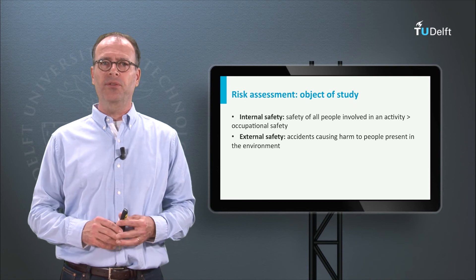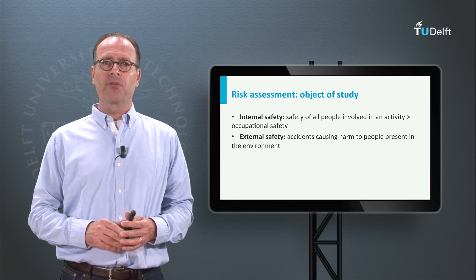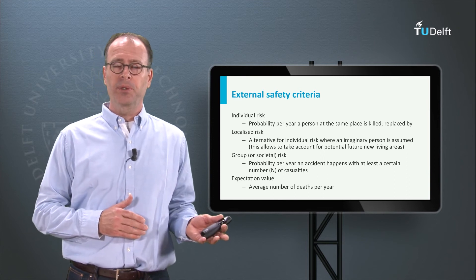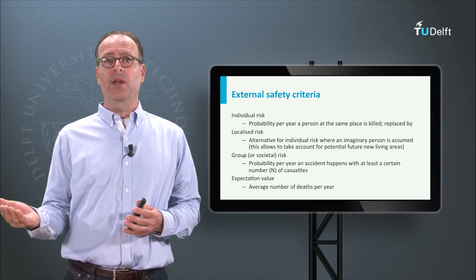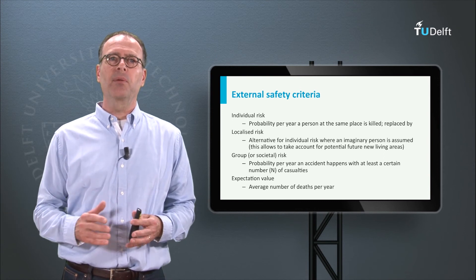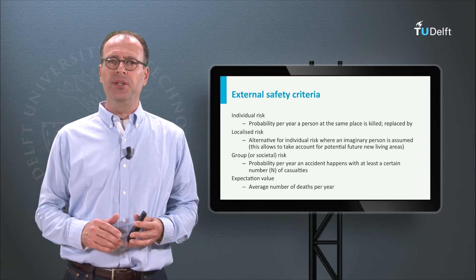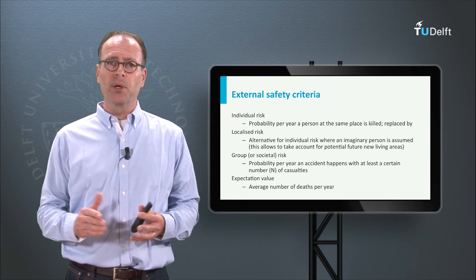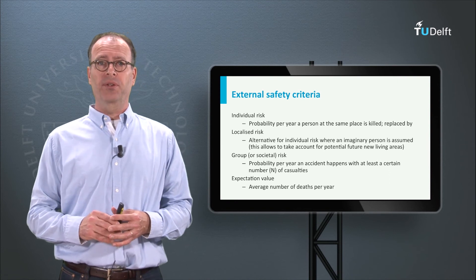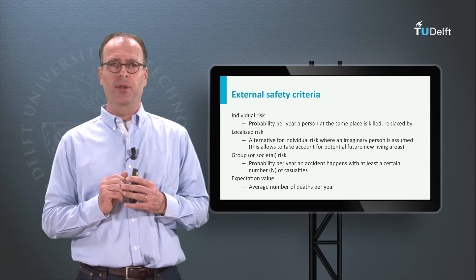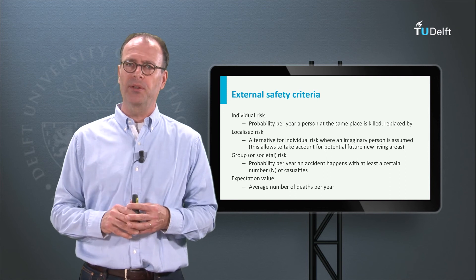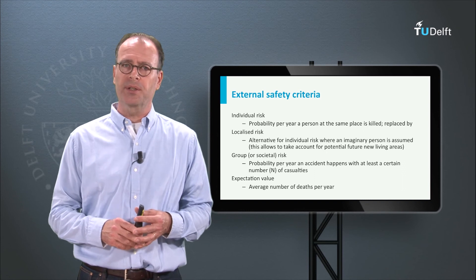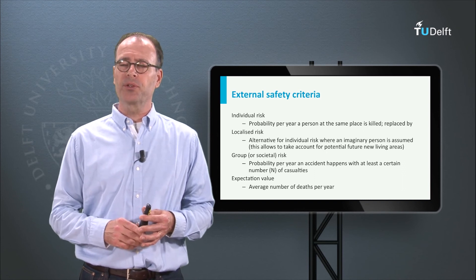When we talk about external safety, there are different types of risks defined. We have individual risk — later replaced by localized risk — which is the probability that one person is killed in a year at a particular place because of some hazardous activity. We also have group or societal risk, which is about a particular number of people being killed per year with a certain probability. Finally, we have the expectation value, which is an average of people killed per year. I will explain the first two now.